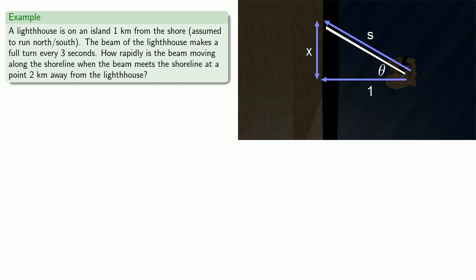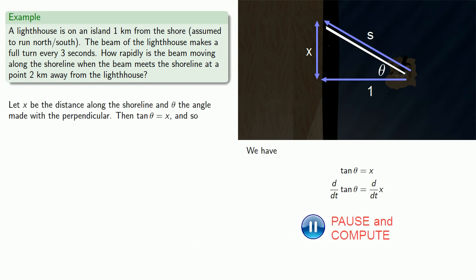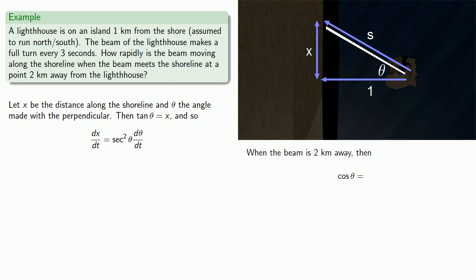There are several trigonometric relationships we could use, but because we're interested in the rate of change of x, we should use one that involves x directly. And in this case, we can use tangent of theta, differentiating with respect to t. Now we need secant theta, which we can get once we know cosine of theta. When the beam is 2 kilometers away, then cosine of theta will be, which gives us secant theta equal to 2. We've already figured out d theta/dt is 2 pi over 3 radians per second, and so that allows us to find dx/dt.